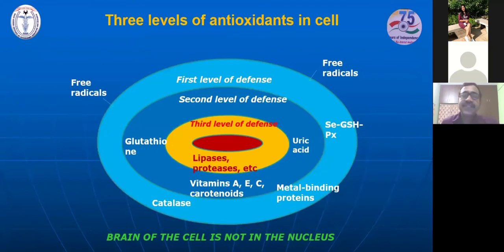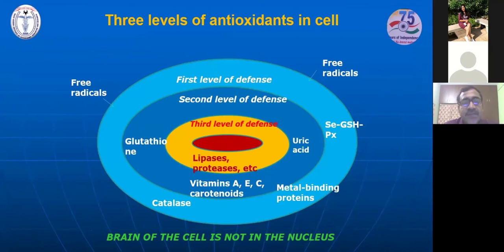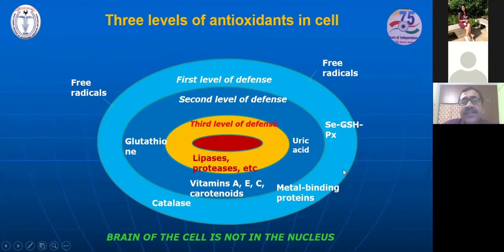The mechanism of antioxidants at a cellular level happens at three stages — first, second, and third level. Enzymes like glutathione, catalase, and metal-binding proteins, along with vitamins, work at different stages simultaneously to safeguard us from the harmful effects of free radicals, which are unavoidable.